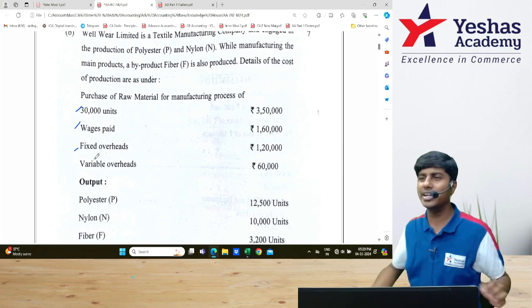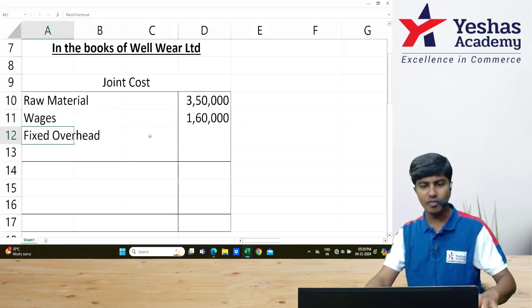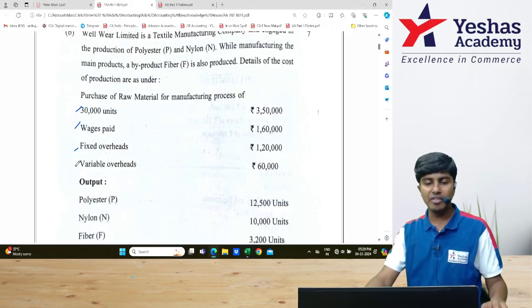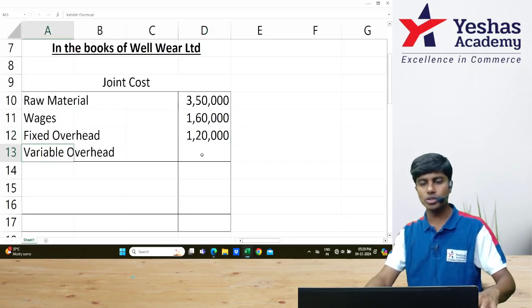There is no amount of fixed overhead which is supposed to be transferred to P&L. Such data is not given for us to compute. So I will take entire ₹1,20,000 of fixed overhead into my joint cost. After that, I have variable overhead. This is taken into the production cost. I will take ₹60,000 of variable overhead also.